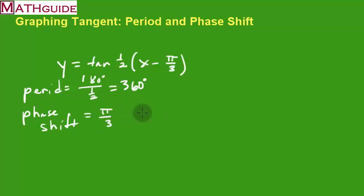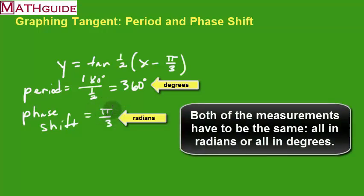Now this problem is strange because I've got a degree period and I've got a phase shift which is in radians. But remember, pi is just 180 degrees, that's half a circle. So this is 180 divided by 3. 180 divided by 3 is 60. So really the phase shift is 60 degrees. We've got everything now consistent. Everything is now in degrees.